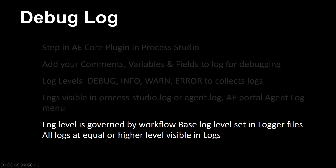On top of the Debug Log Step log setting, the workflow log level is governed by the log level set in the logger files. The Process Studio logger file log4j2.xml is in the Process Studio Conf folder, and the Agent Logger file log4j2.xml is in the Agent Conf folder. You can set the log level to debug, info, warn, or error in the file. All logs at equal or higher level than this setting are visible in Process Studio or Agent Log files respectively.